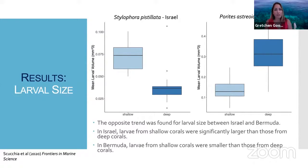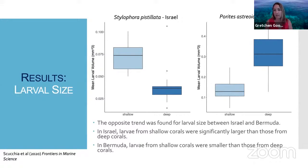One potential explanation for this could be differential light availability between the two geographic locations. Eilat is located at the very tip of the Red Sea in a relatively enclosed location, whereas Bermuda is open ocean with much greater water clarity. Light penetration in Bermuda is likely deeper than in Eilat. So on mesophotic reefs in Bermuda, corals may be getting more energy from photosynthesis, which could translate into more energy allocated to reproduction, resulting in the differential larval sizes we observe.